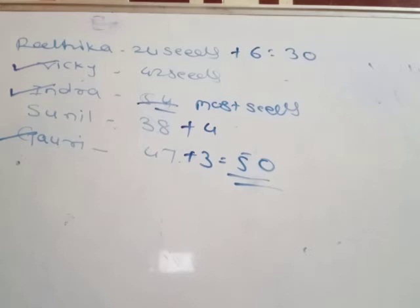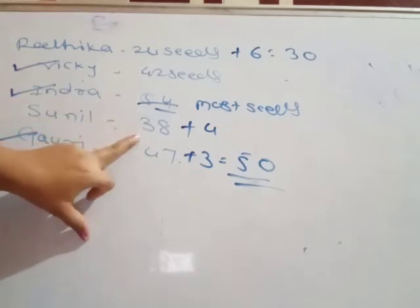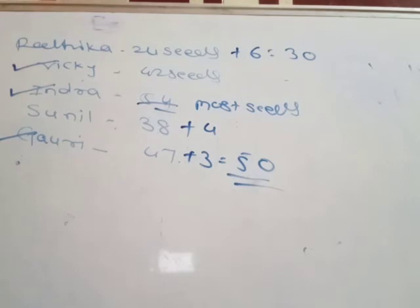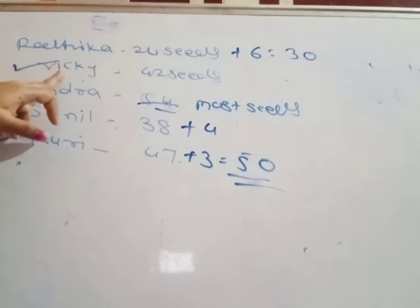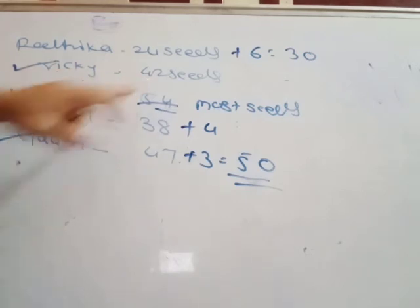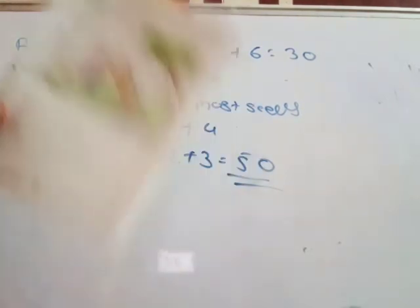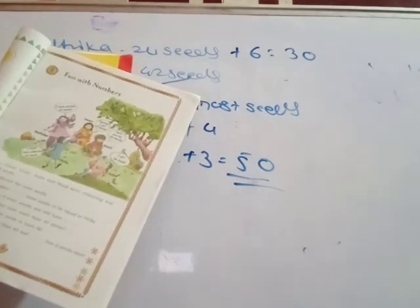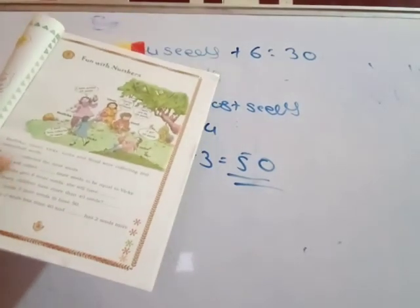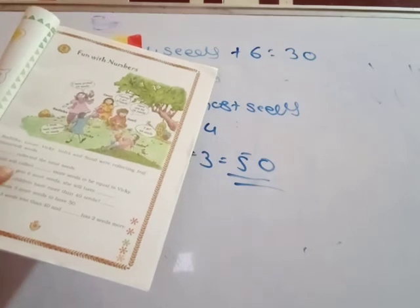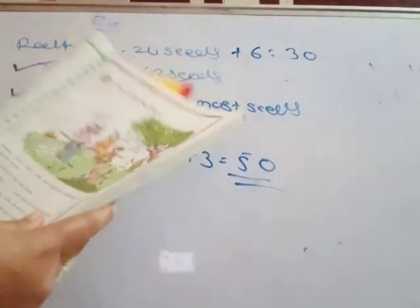Sunil has 2 seeds less than 40, means 38. And blank has 2 seeds more than 40. Who has 2 seeds more than 40? 42 means more than 40 seeds — means Viki has. All of you have the book, then you complete this fill in the blanks.